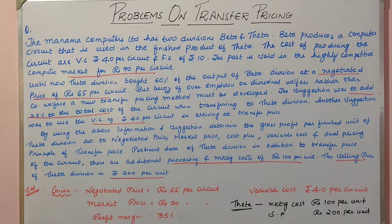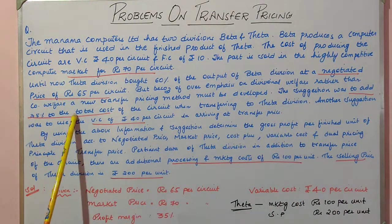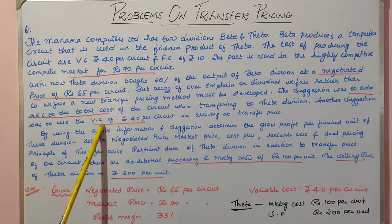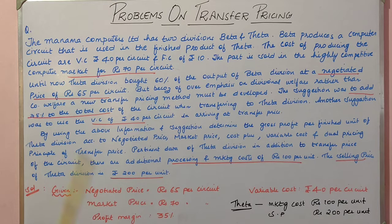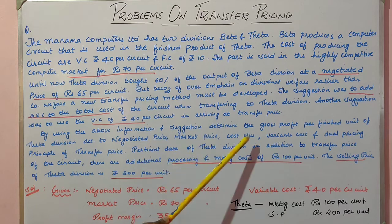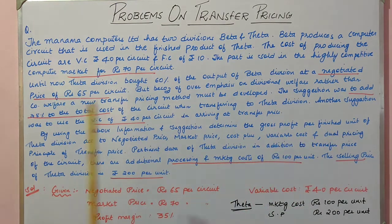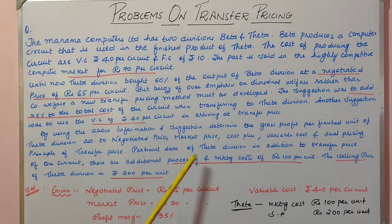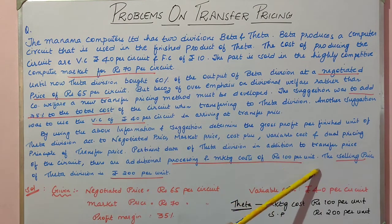The company wants to change its transfer pricing method. Various suggestions have been received: one suggestion is to add 35% to the total cost and charge that as the transfer price. Another suggestion is to use variable cost of 40 per circuit as the transfer price. The question asks you to find gross profit under negotiated price, market price, cost plus price, variable cost, and dual pricing methods. Additional information for Theta: additional processing and marketing cost is 100 per unit, and the selling price of Theta division is 200 per unit.